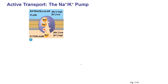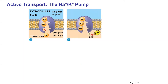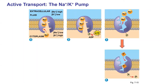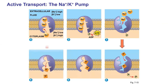One of the best understood active transport systems is the sodium-potassium pump, which is very active in neurons. It transports three sodiums out and two potassiums in per cycle. Three sodiums bind to the protein; ATP breaks down to ADP, providing energy to hinge the gate and release sodiums outside the cell. The gate then binds two potassiums, which signals it to hinge back toward the cytoplasm and release the potassium inside.